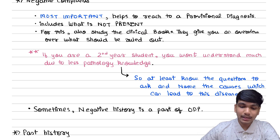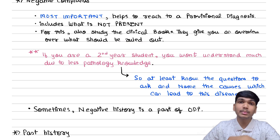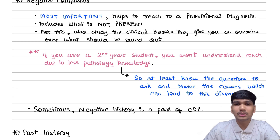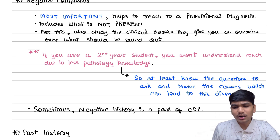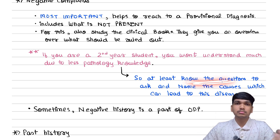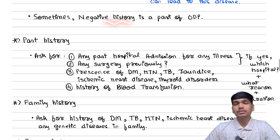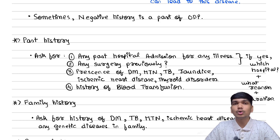You have to put a clinical scenario in the mind of the doctor so that he can understand which disease you are pointing to. Include what is not present and eliminate it. You should study the clinical books for an overview. If you are in second year of MBBS, you might not know diseases very well since you have just started studying pathology — so do not worry. Know the causes of the disease involved, the different causes, and what questions you can ask. Some doctors want the negative history as part of ODP, while others want it separate — write it accordingly.